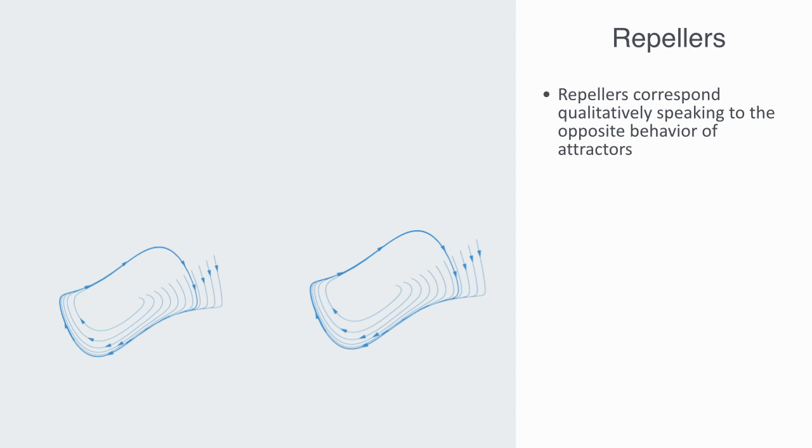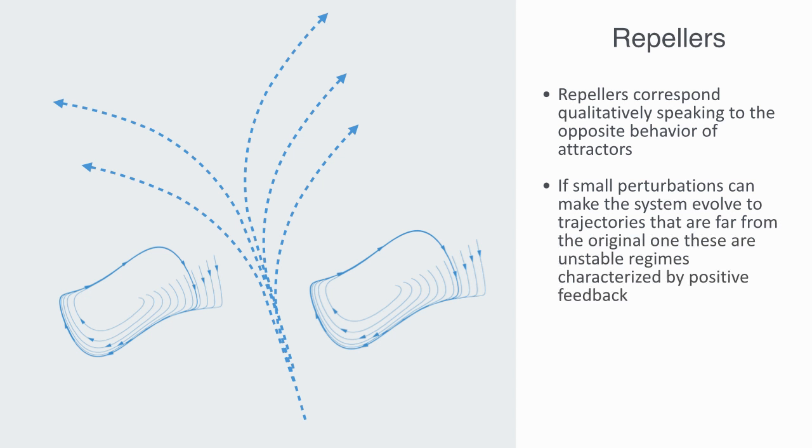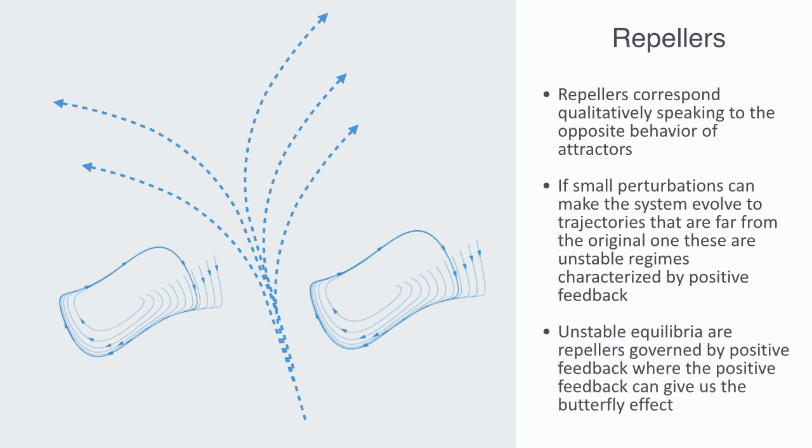Repellors correspond, qualitatively speaking, to the opposite behavior of attractors. Given a fixed point or cyclical trajectory of a dynamical system, they are called repellor-type trajectories if small perturbations can make the system evolve to trajectories that are far from the original one. Thus, these are unstable regimes characterized by positive feedback. If there are several attractors in a phase space, then their attraction regimes are separated by unstable point sets representing repellers, so that all or almost all neighboring phase trajectories are repelled from each other. We can say then that the stable equilibria are attractors with negative feedback. Unstable equilibria are repellers governed by positive feedback, where the positive feedback can give us the butterfly effect—a non-linear amplification of some small event into a large change process.